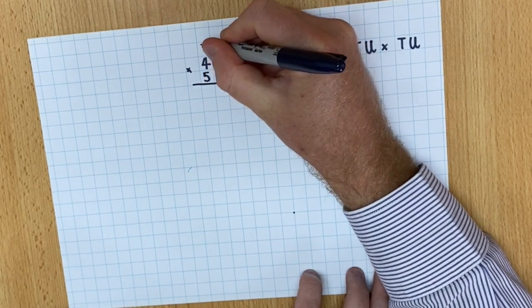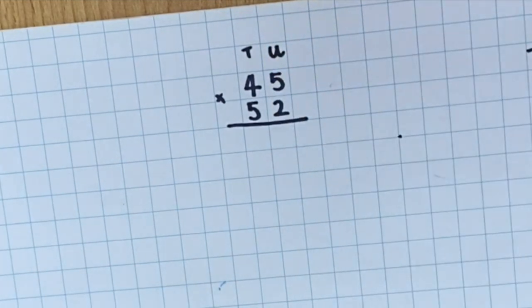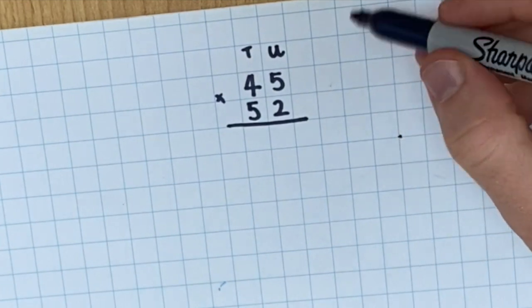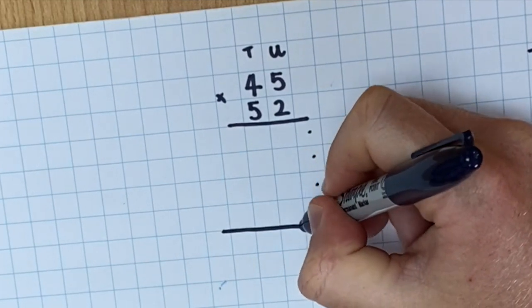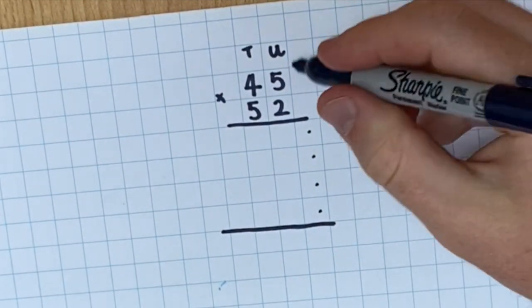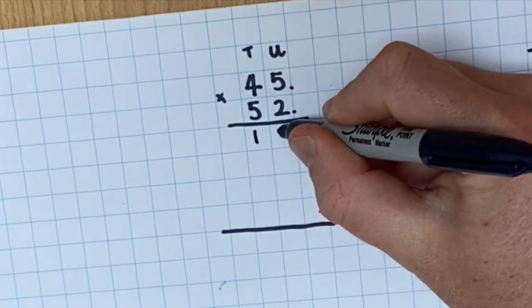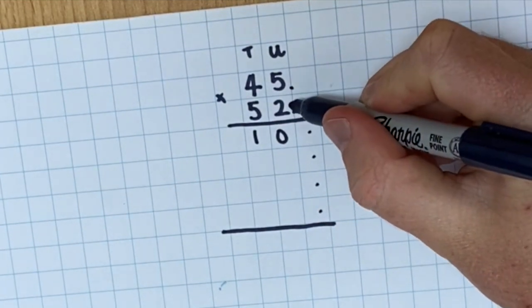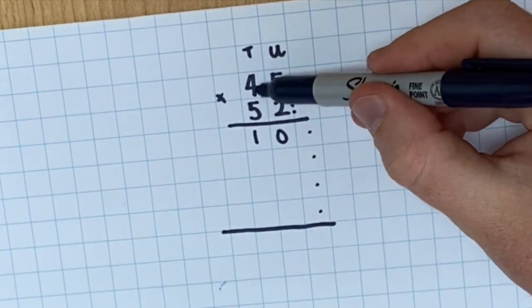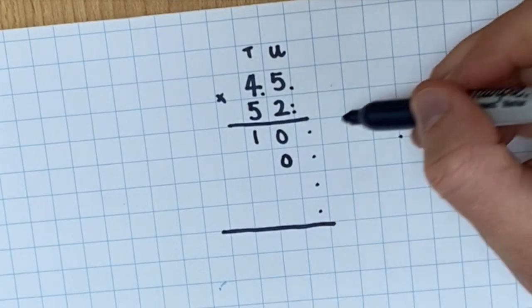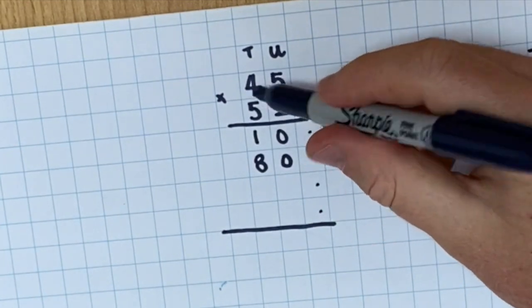So I'm going to take 45 multiplied by 52. Notice that I've still got my tens all together, so 40 and 50, and I've got my units together, 5 and 2. So this is the easier way. I'm going to need 1, 2, 3, 4 lines for this. So I'm going to start by multiplying my units together. So 2 times 5 is 10. Then I'm going to multiply my units, so 2 by 4. But this 4 is actually a 40, so I must put a 0 down. So 2 times 4 is 8. And that makes 80, because 2 times 40 is 80.